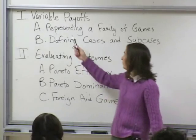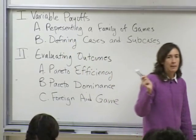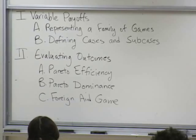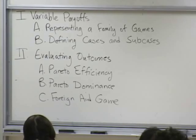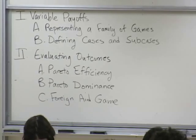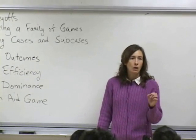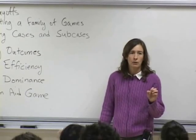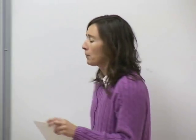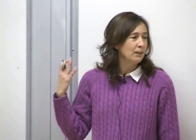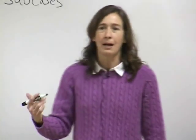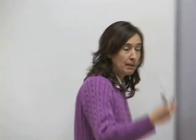Today we're going to ratchet the level of abstraction up a little bit. As we've been going through the fundraising game, I've mentioned that when political scientists and other social scientists use game theory in their work, we generally don't put specific numbers in our payoffs. Those specific numbers can be helpful because they're very concrete and easy to look at and interpret, but there's always a nagging feeling that we just made up those numbers.